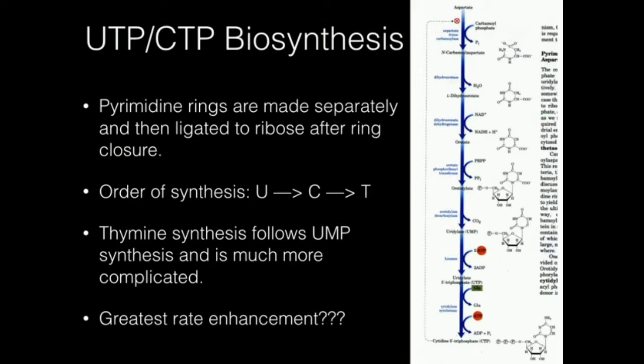In this video, we're particularly going to look at UTP and CTP biosynthesis. Thymine is made in a very different way — it's made from U and C, but it's going to require a lot of different other reactions, so we're going to cover that later in this playlist.